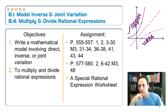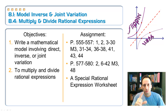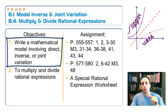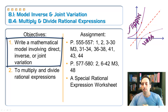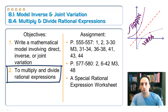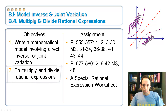Here's your first lesson from this new unit, cramming together two completely different things: 8.1 Modeling Inverse and Joint Variation — we've talked about direct variation before, we're going to review that and tie it all together — and then 8.4 Multiplying and Dividing Rational Expressions. It's all going to make sense eventually. Objective one: write mathematical models involving direct, inverse, or joint variation. Objective two: multiply and divide rational expressions, which look just like fractions with variables on top and bottom.